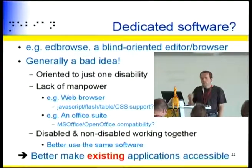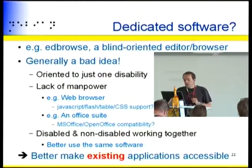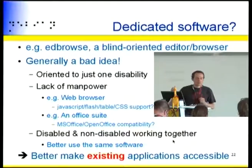Another idea is making dedicated accessible software — for instance, EDBrows, a blind-oriented editor and browser. This is generally a bad idea, because quite often it's dedicated to one kind of disability and not universal. You would have to maintain a web browser implementing JavaScript, Flash, Tables, CSS, etc., or an office suite with Microsoft compatibility. Also importantly: the key thing is not only getting help but also working with people. If you use the same software, you can work together, collaborate in real time, and point at things. That's why we should make existing software accessible instead of writing new software.